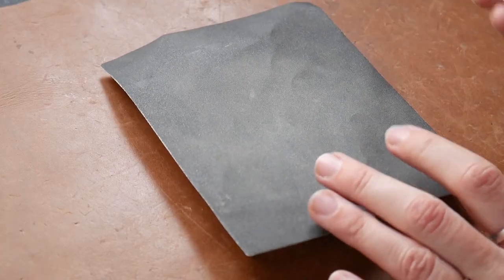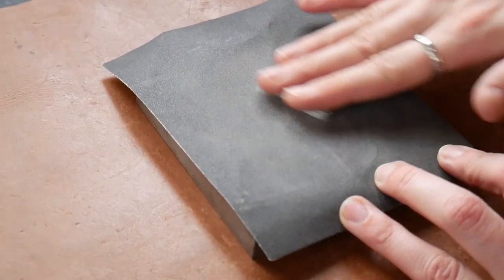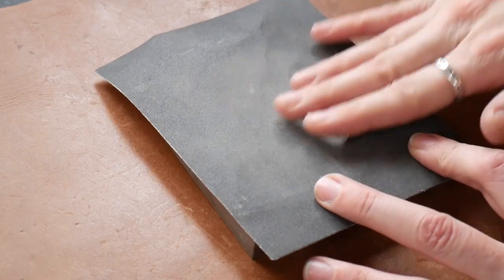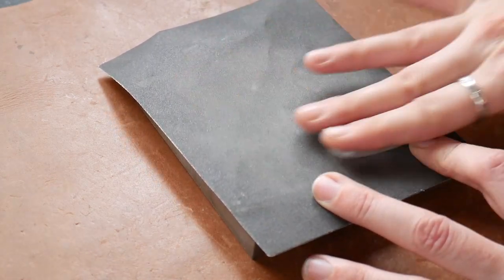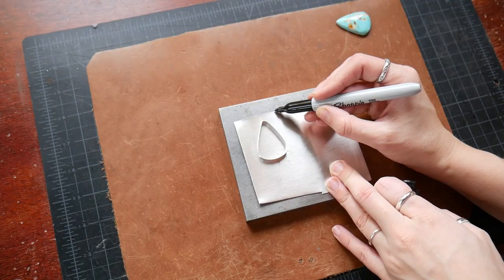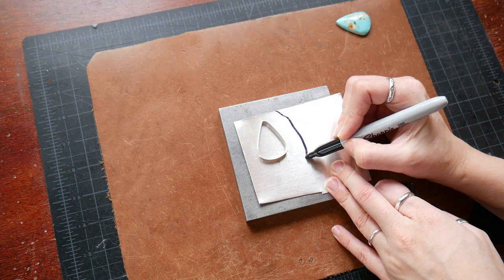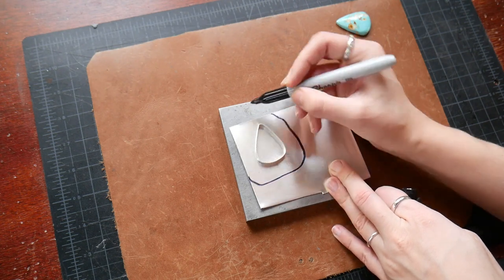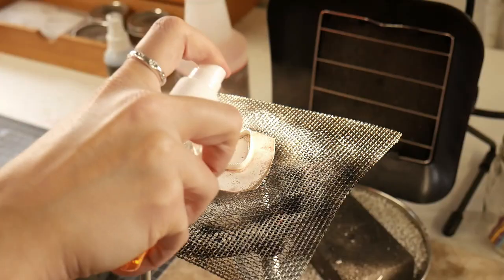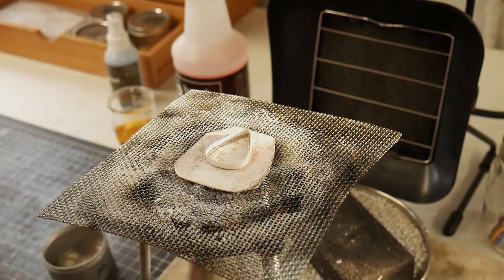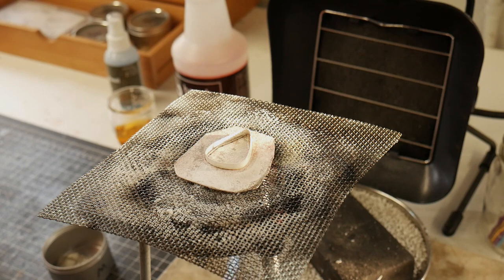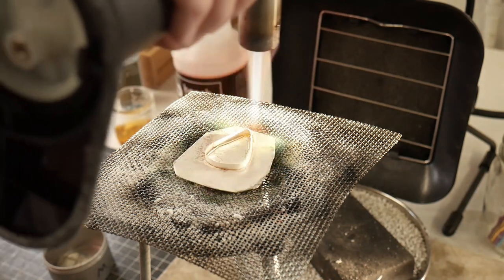Now I'm going to get ready to solder the bezel to the back plate. What I'm first going to do is just sand the bottom of the bezel so it sits nice and flat and even on the back plate. I'm going to be using medium solder to solder the bezel to the back plate, and I'm just going to alternate between heating underneath the piece and above the piece.